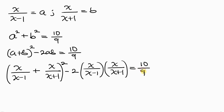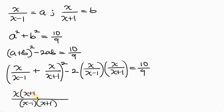Simplifying further, the LCM of (x-1) and (x+1) is (x-1)(x+1). Dividing: LCM/(x-1) gives (x+1), so the first term becomes x(x+1); LCM/(x+1) gives (x-1), so the second term becomes x(x-1). The combined numerator is x(x+1) + x(x-1).